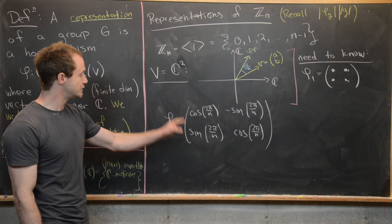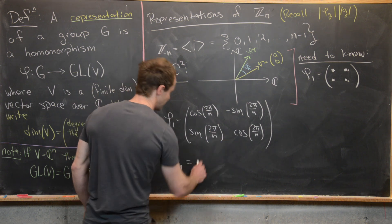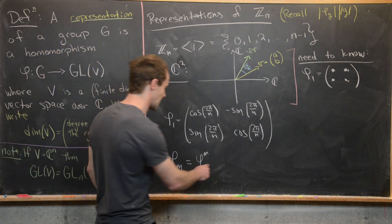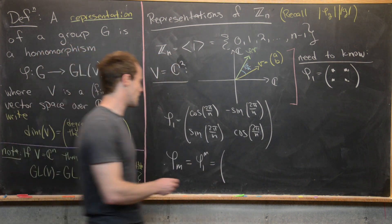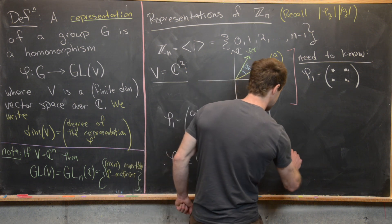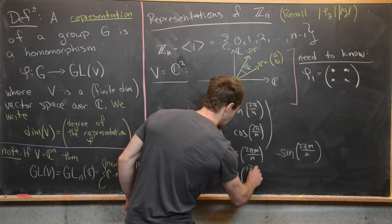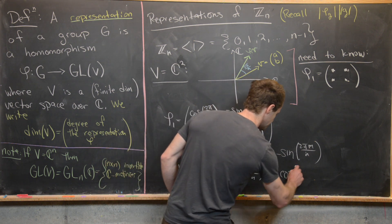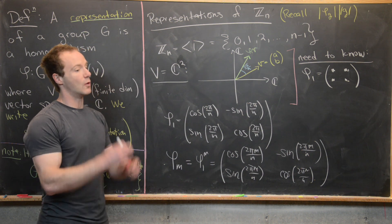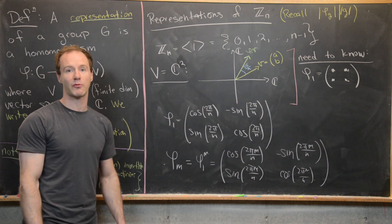Using the homomorphism property, phi(m) = phi(1)^m, i.e., the rotation matrix applied m times. This gives phi(m) = [[cos(2πm/n), -sin(2πm/n)], [sin(2πm/n), cos(2πm/n)]], a rotation by 2πm/n radians.